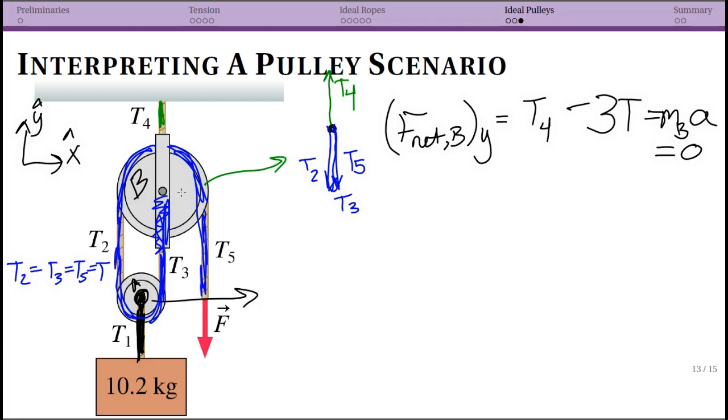Now let's look at pulley A. I see down, I have T1. I don't draw the mass directly, I draw what I see on it. And then up, I have T2 and I have T3. We can say that each of those is equal to T. So now we have a relationship for F net of A in the y direction equals 2T, because that was T2 plus T3 minus T1.